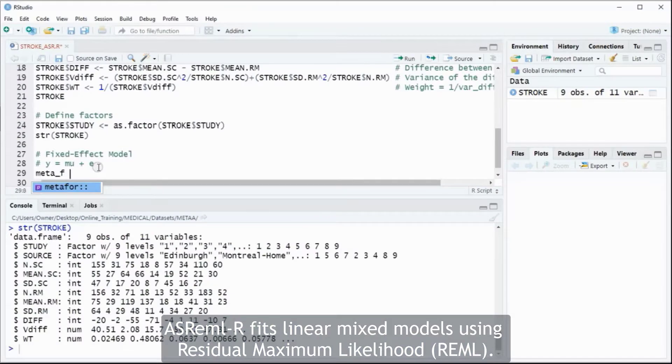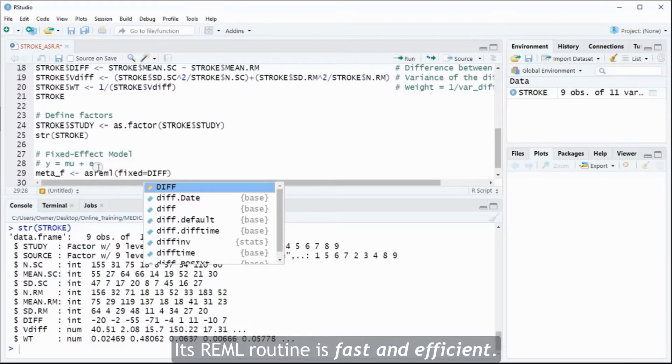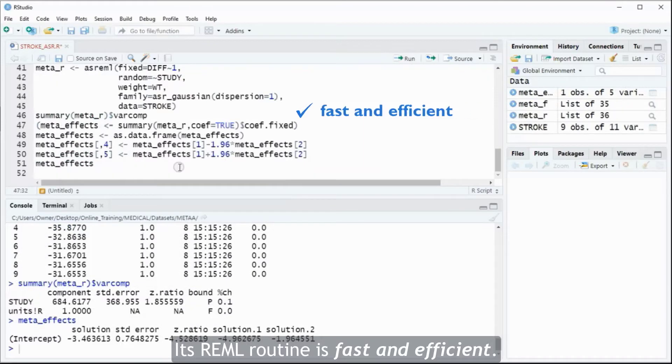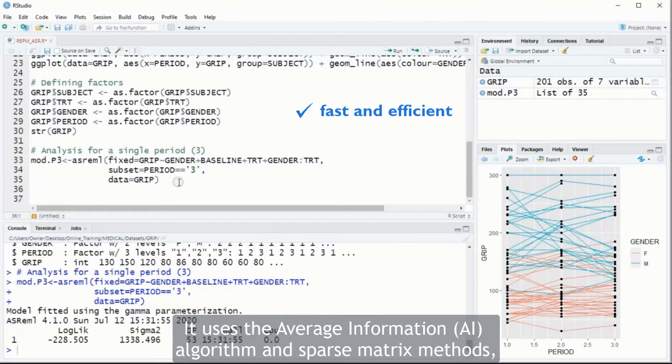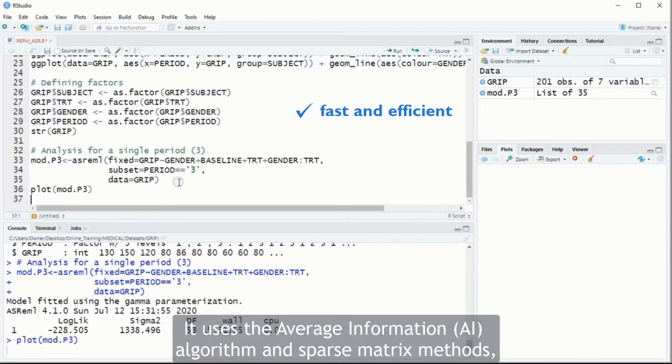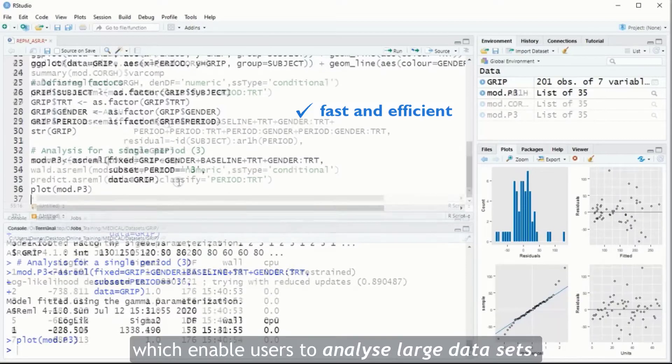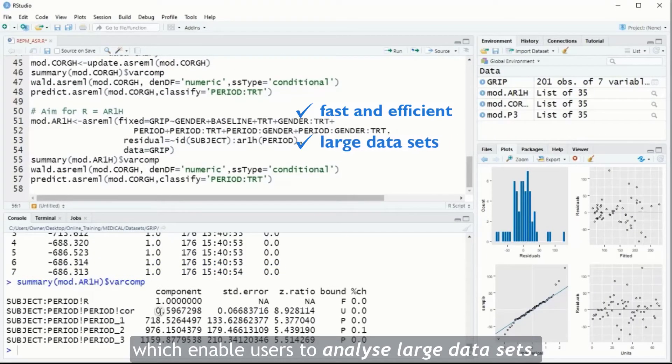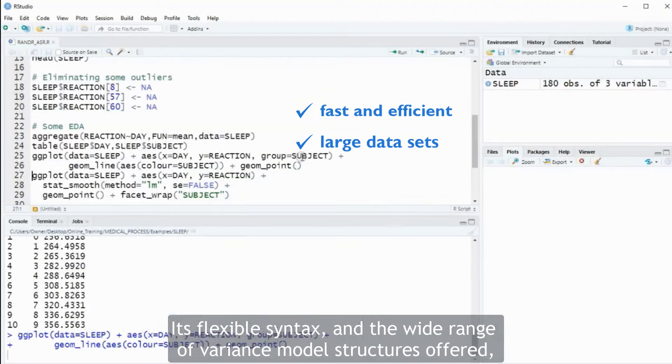ASRML R fits linear mixed models using residual maximum likelihood. Its REML routine is fast and efficient. It uses the average information algorithm and sparse matrix methods which enable users to analyze large datasets.